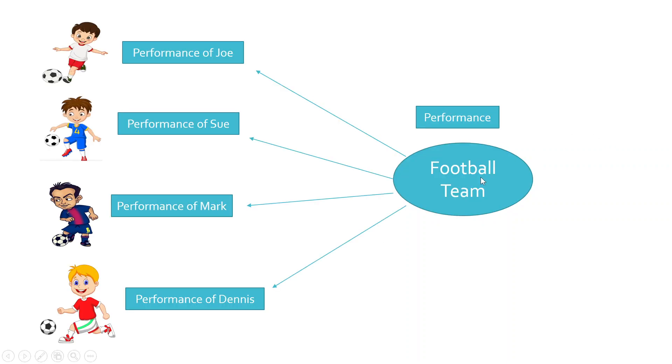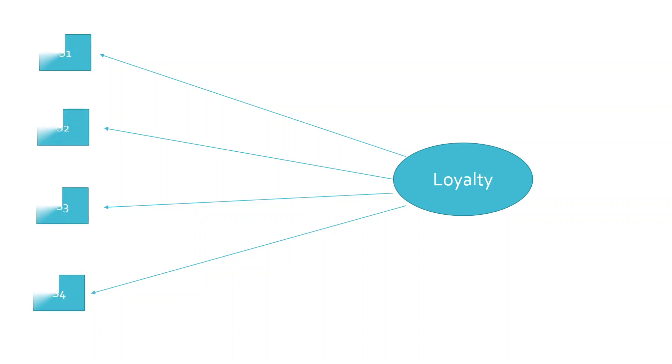Assume that instead of these players and this football team, we are having one construct: loyalty. Now, as football—see, this football team is not going to play. On behalf of this football team, these players are going to play, and the performance of these players will determine the performance of the football team. Similarly here also, in our study, loyalty is a construct.